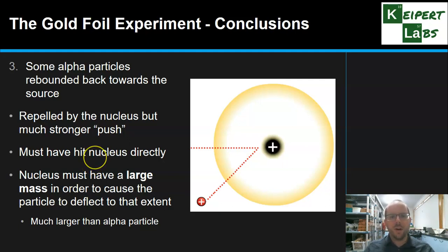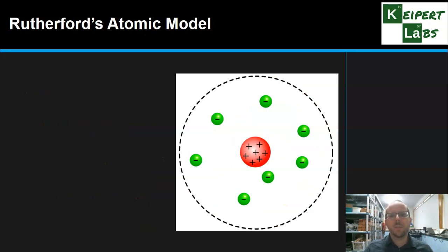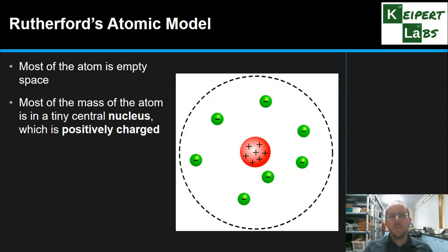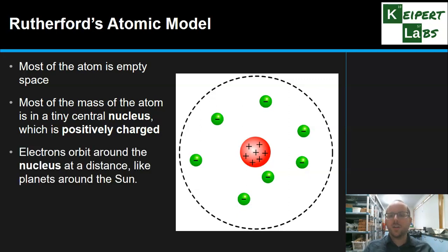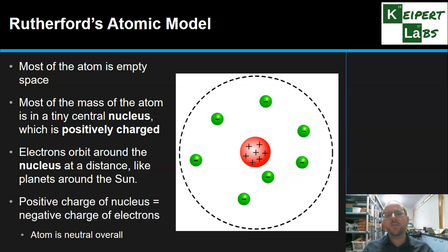Rutherford generalized his atomic model which looks a bit like this. Most of the atom is made up of empty space. Most of the mass of the atom, however, is in the tiny central nucleus in the middle, which has a positive charge. Electrons, which still existed, therefore must orbit around this nucleus at a distance. So instead of being this spherical cloud of positive charge, they're orbiting in the emptiness like planets around the sun. The positive charge inside the nucleus must equal the negative charge of the electrons, so the atom is neutral overall.